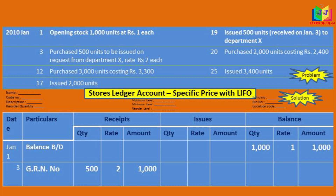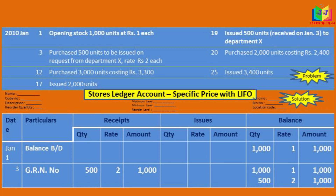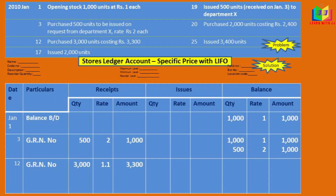This 500 units is issued at the request of the department, so it will not be issued for any other purpose. It is to be issued on a specific date. So we will write it in the receipt column: 500 units, rate 2 rupees, amount 1000. Under the balance of 1000 units, we will write this 500 units.